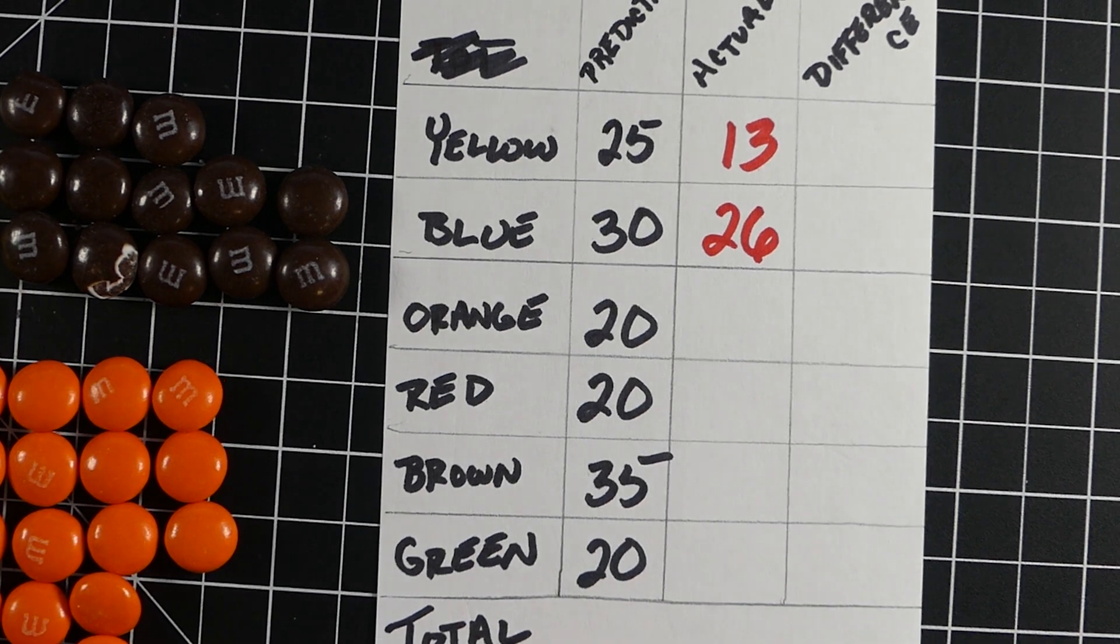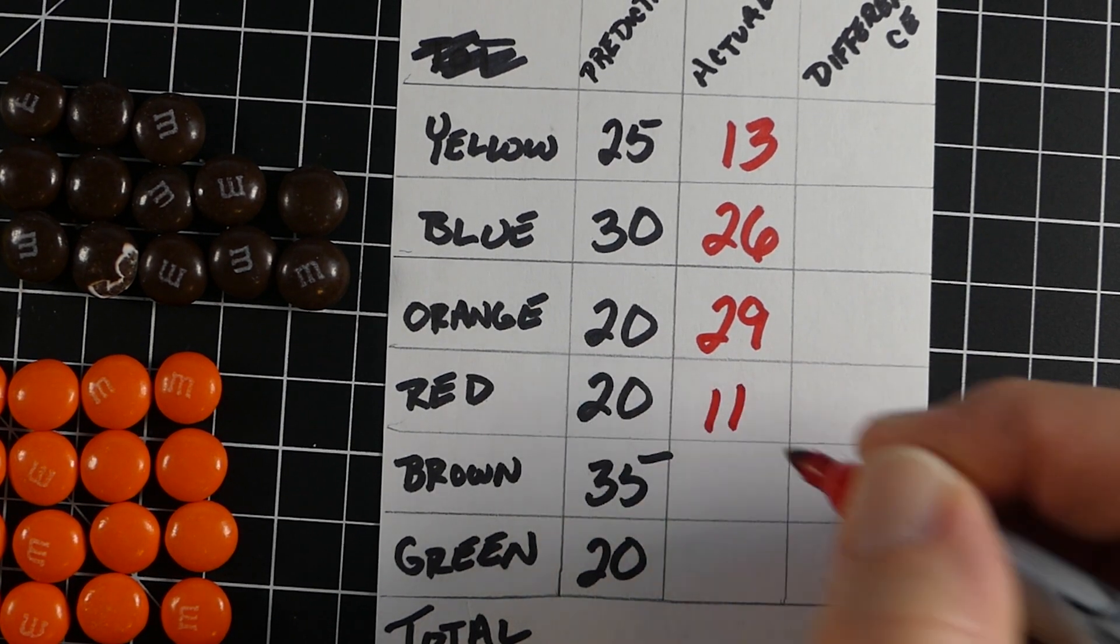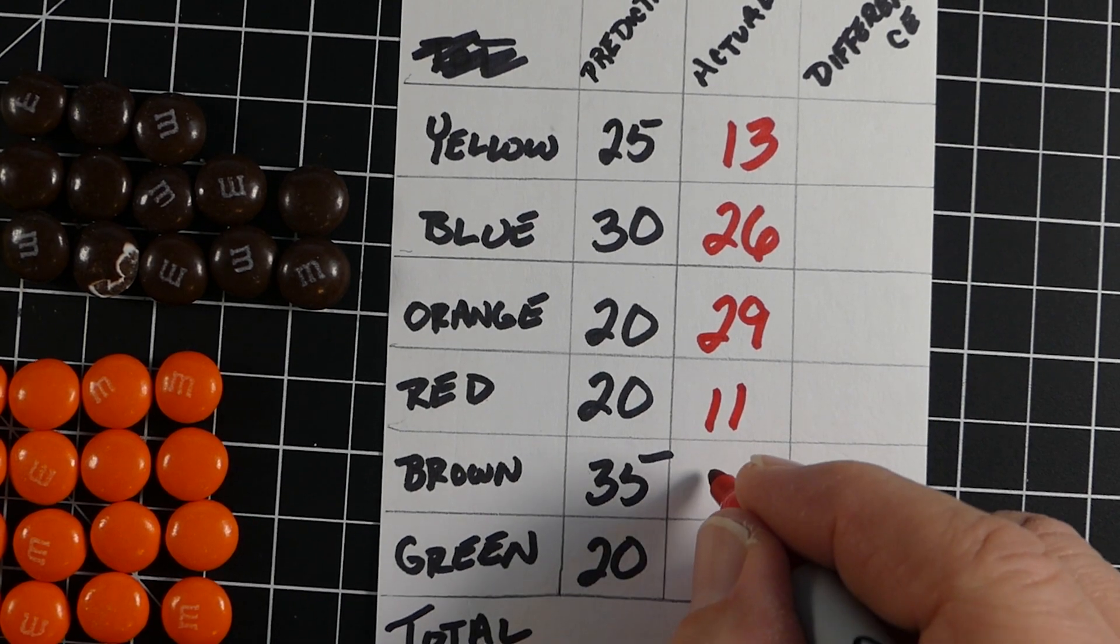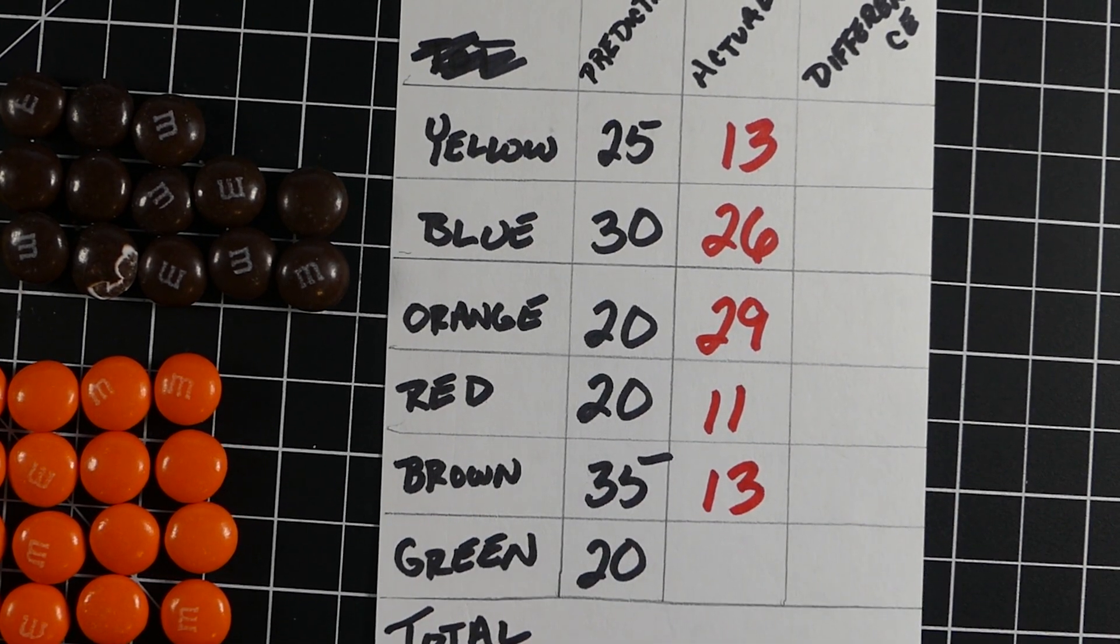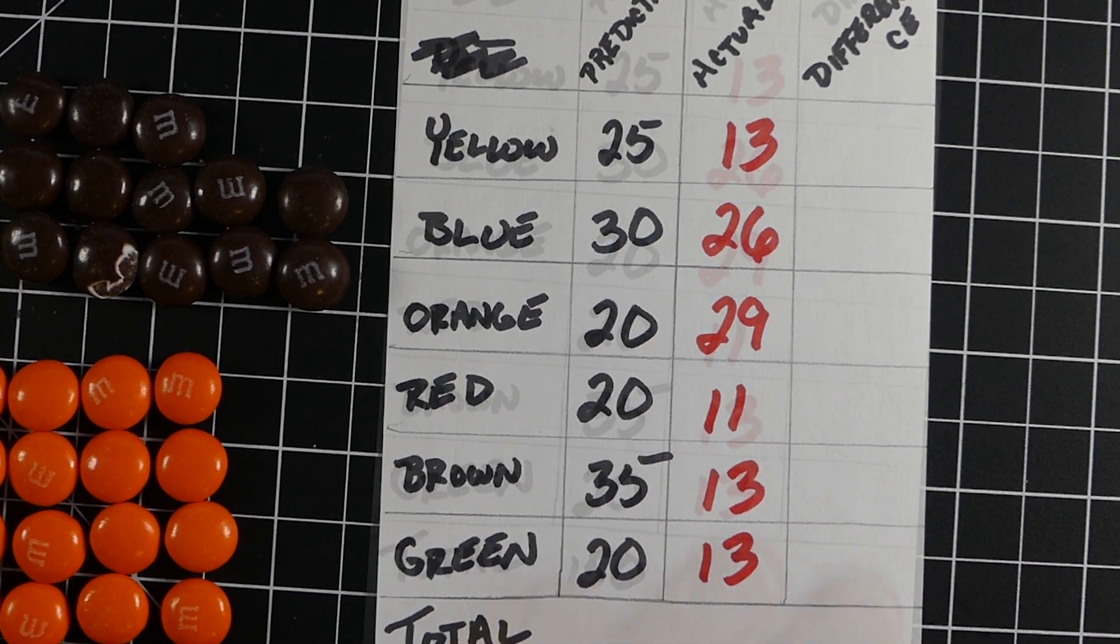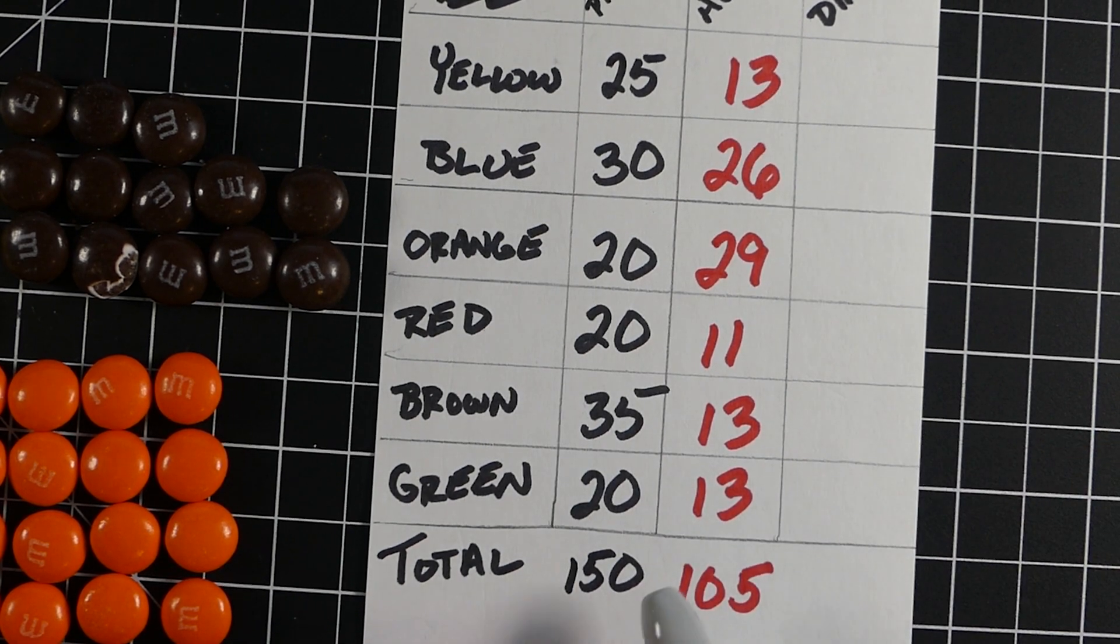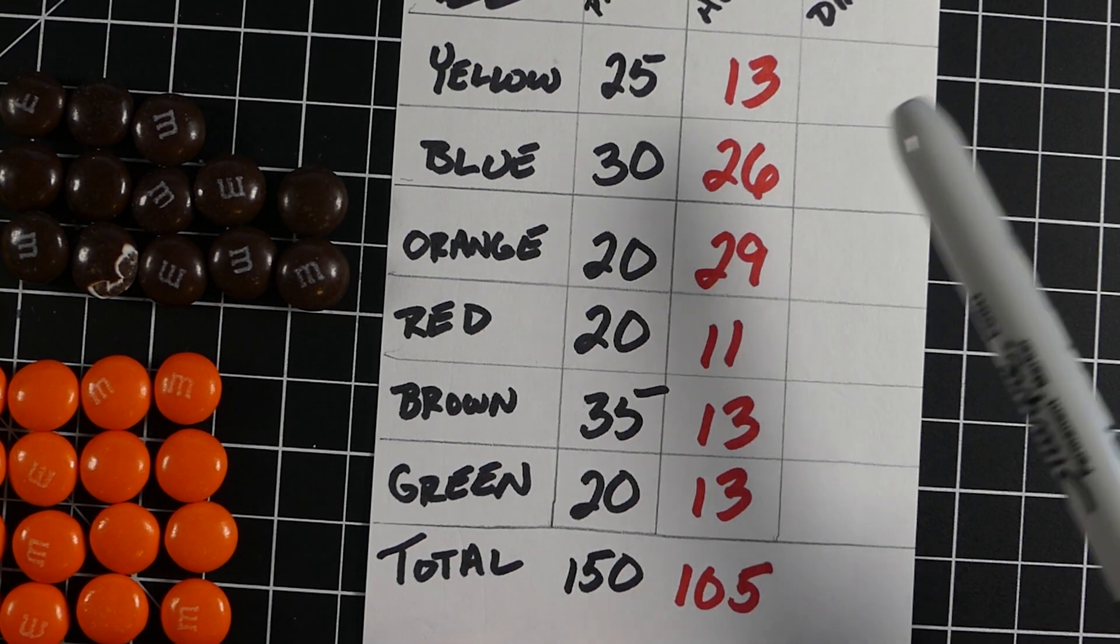I went through and started counting up the actual results. Some were fairly close - blue was 30, I guessed it was actually 26. Some not so much. For brown I thought 35 but actually only had 13. I thought 150 total but we only had 105 M&Ms in the whole box.